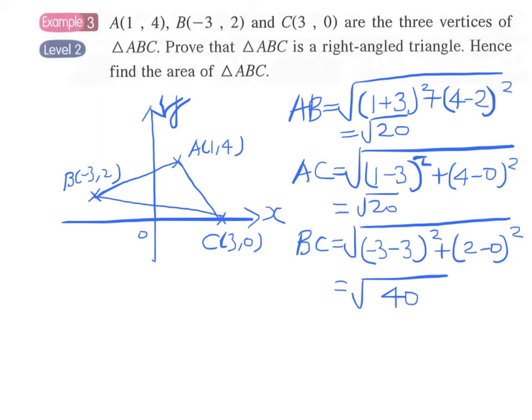And so it is quite obvious that the square of AB plus the square of AC, these are the two shorter sides, and the sum will equal to the square of BC. So we can write this in this way: square of AB plus square of AC. We just find the value of this expression, and it happens that this equals to the square of BC.